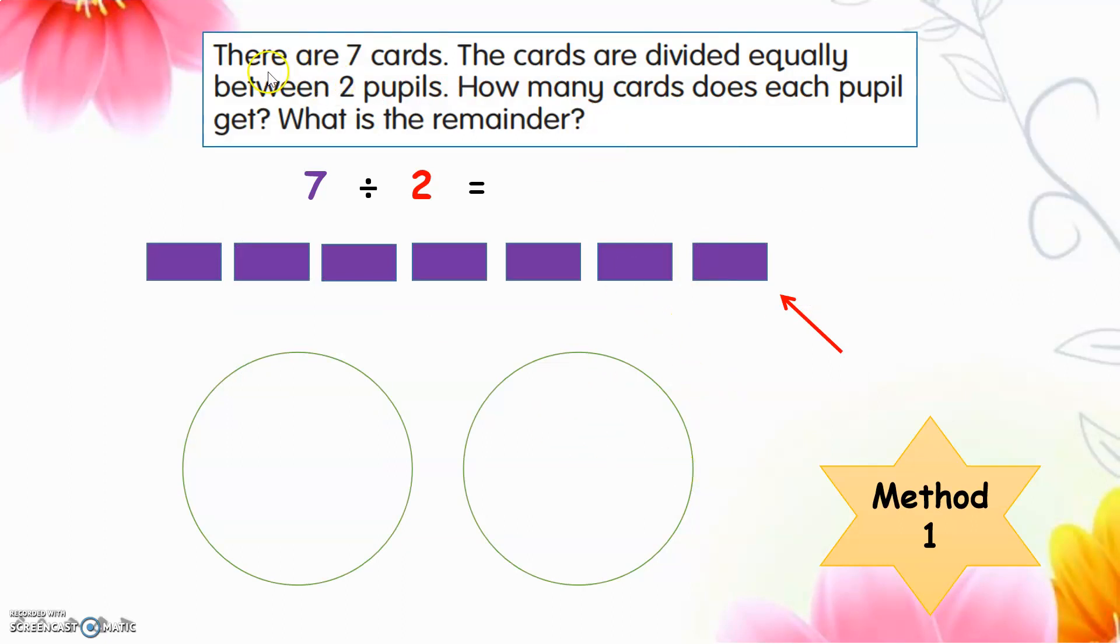Let's find the solution for the question. There are 7 cards. The cards are divided equally between 2 pupils. How many cards does each pupil get? What is the remainder? So to write the number line, first we should find the total. The total is 7 cards, 7 divided equally. That means divided by 2 equals to, and the remainder. We should find the remainder. Remainder means baki. We will use the first method that I showed in the last class.